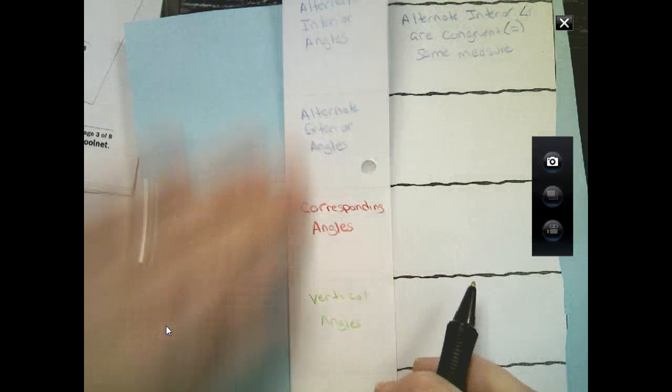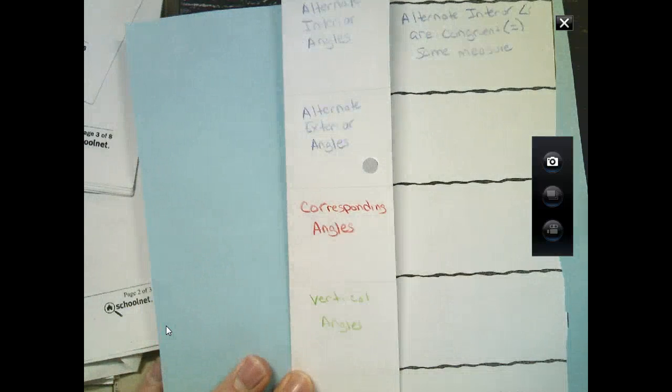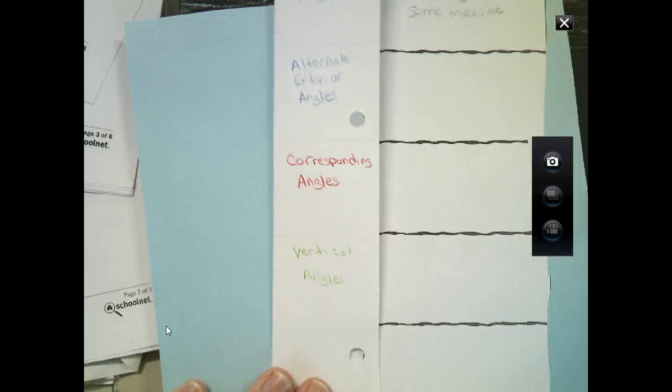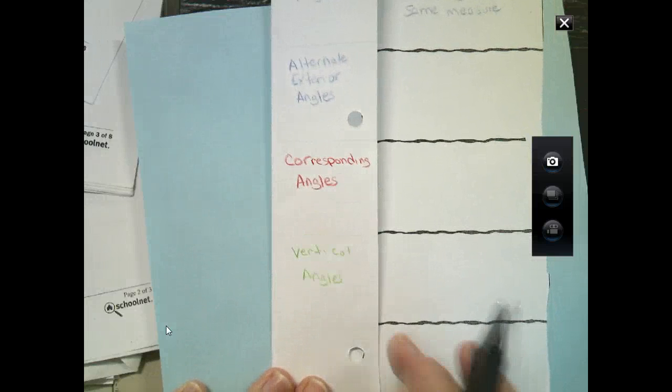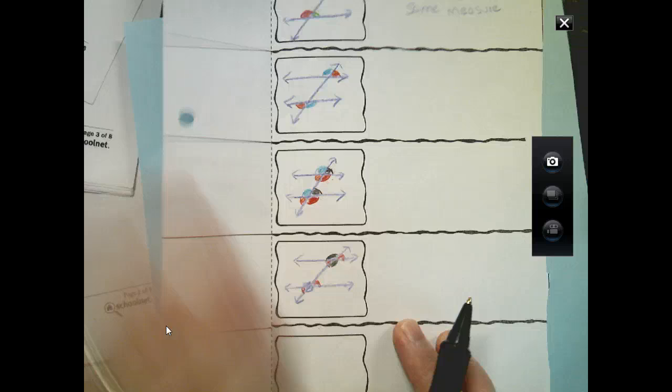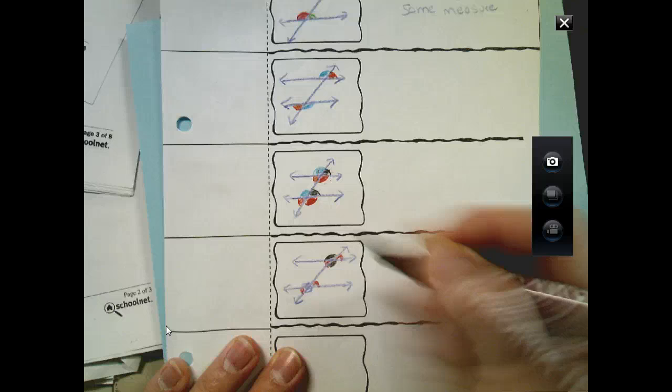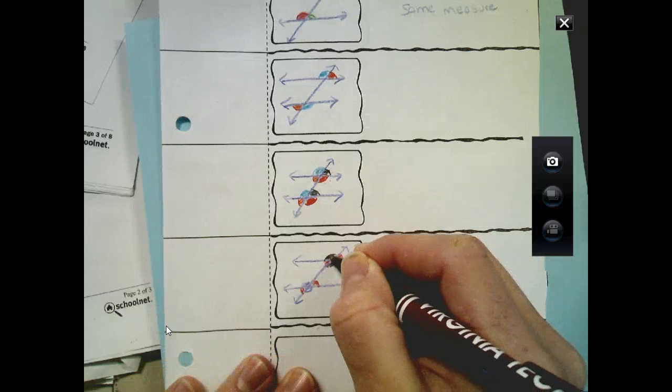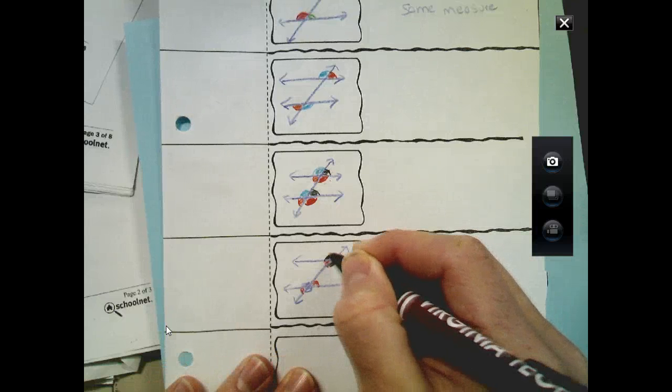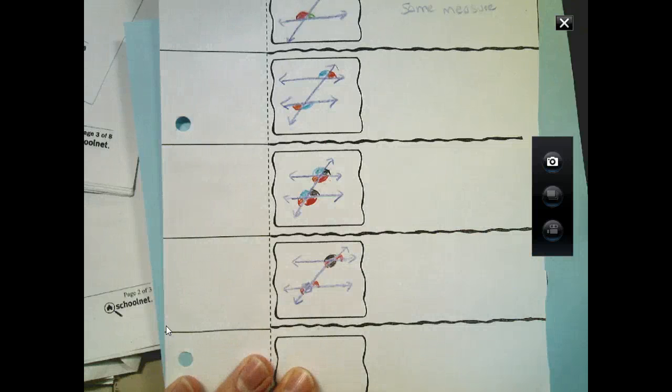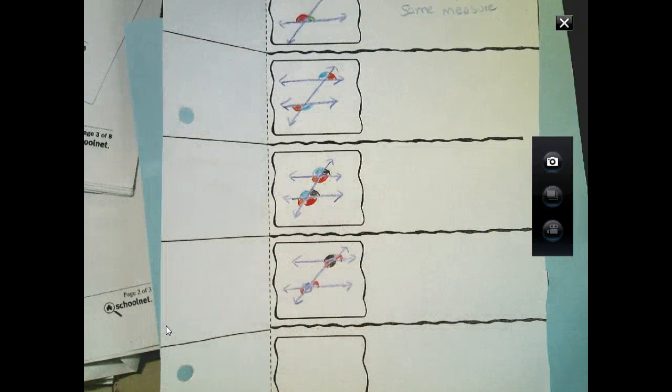And the last one that I'm going to deal with through the foldable is vertical angles. You're going to see a lot of these. When you look at vertical angles, you look straight across. They're vertical. So, here, this one right here, and this one, they're congruent. They're vertical angles. Again, same measure. They're equal.